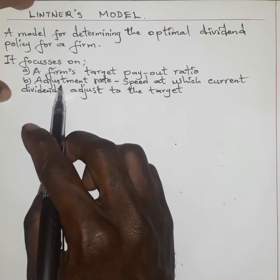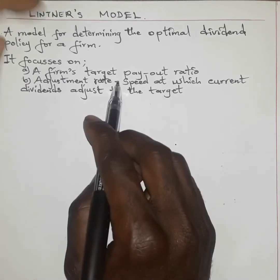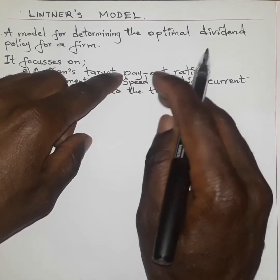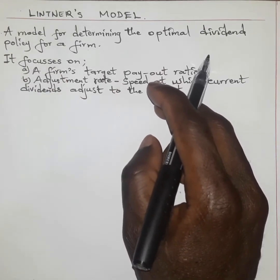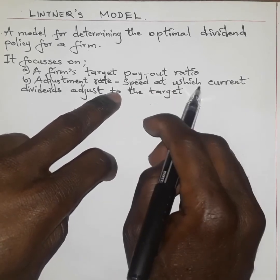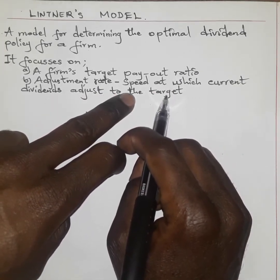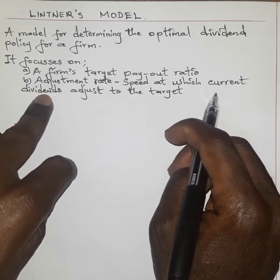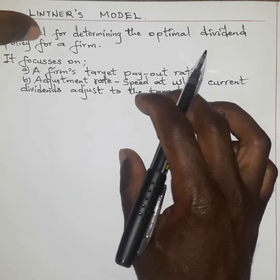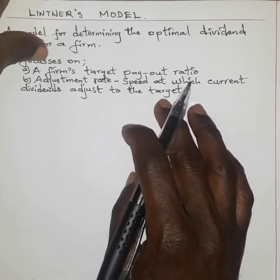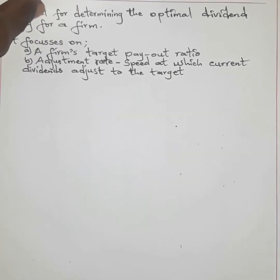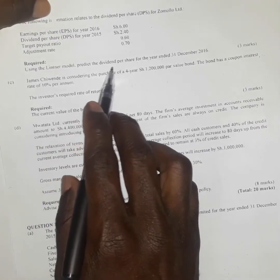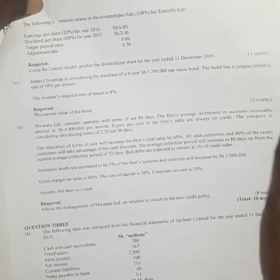The other factor is the adjustment rate. As much as this particular firm is trying to target some particular ratio to be paid as dividends, we talk about the adjustment rate as the speed at which the current dividends adjust to the target. We have a target in the future, but the current dividend is being paid today, so there is a speed at which current dividends are trying to grow toward the future target.